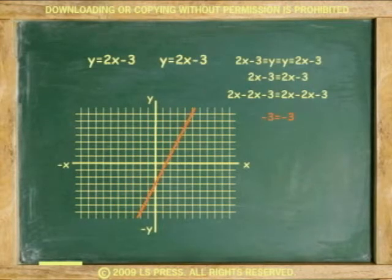If the solution had been a true statement, like negative 3 equals negative 3, then all the points of both lines are at the intersection and both lines are the same, which is a case of identity property.